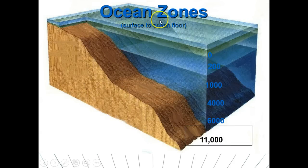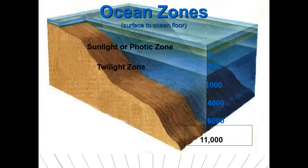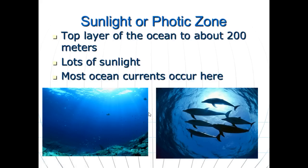Now let's talk about the ocean zones as we go vertically. There are drastic changes in sunlight, temperature, and pressure the further down you go. Near the surface is the sunlight or photic zone — think photosynthesis, this is the light zone. It extends from the surface down to about 200 meters. Most ocean currents and waves occur here, and there are lots of organisms including plankton, phytoplankton, and many fish.